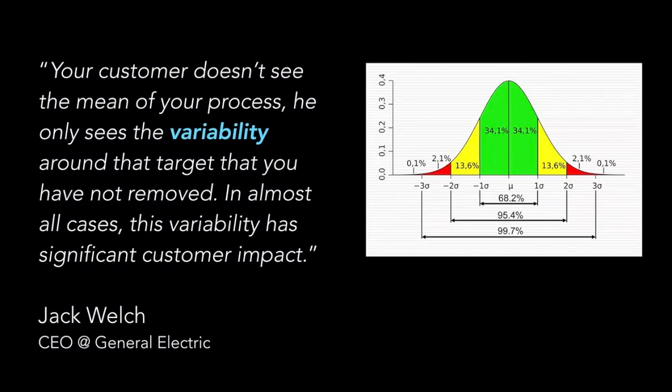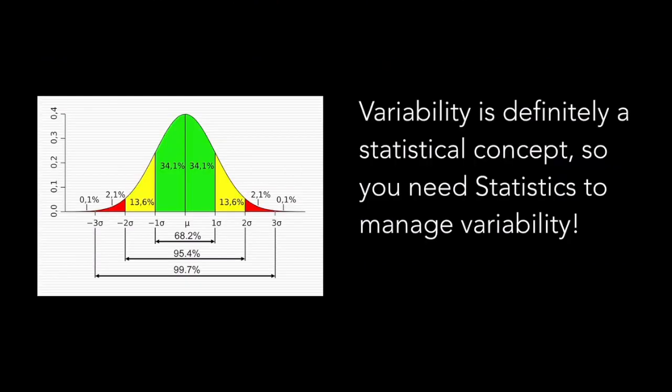Let me dive deeper into the topic using the words of Jack Welch, former CEO at General Electric. Jack Welch said: 'Your customer doesn't see the mean of your process — he only sees the variability around the target that you have not removed. In almost all cases this variability has significant customer impact.' This is definitely and always true. And variability is definitely a statistical concept.